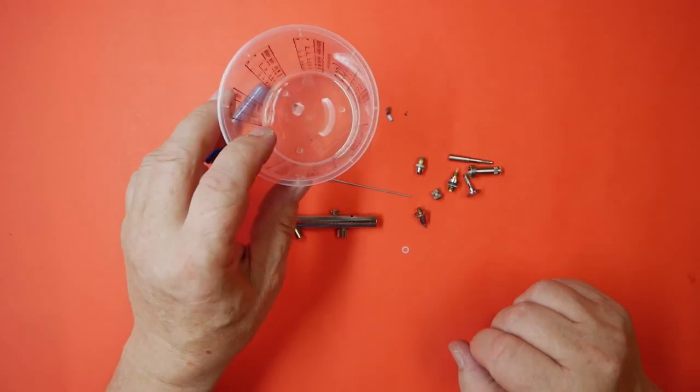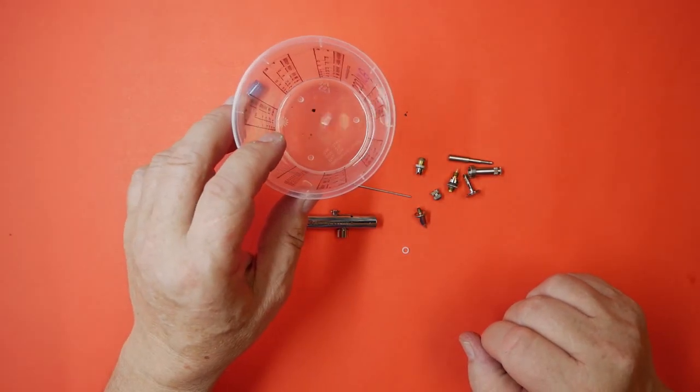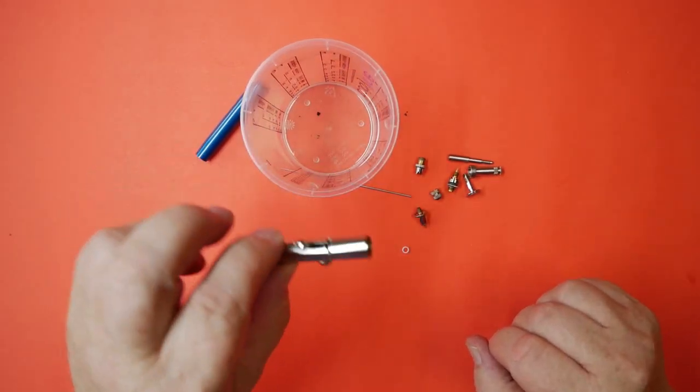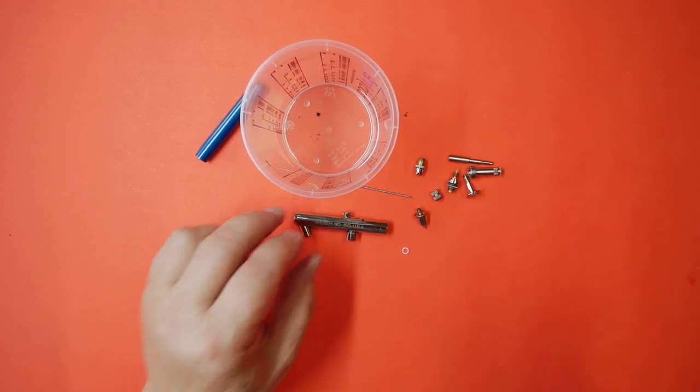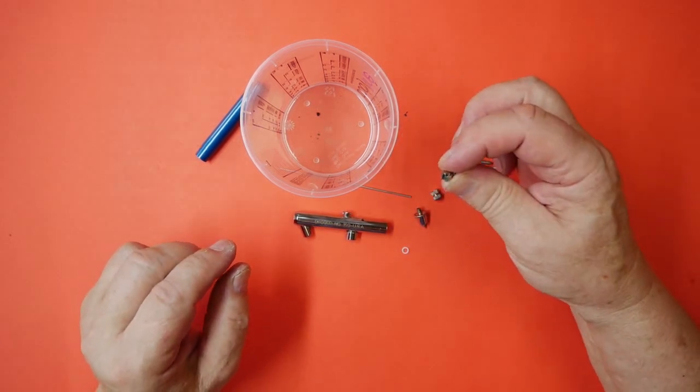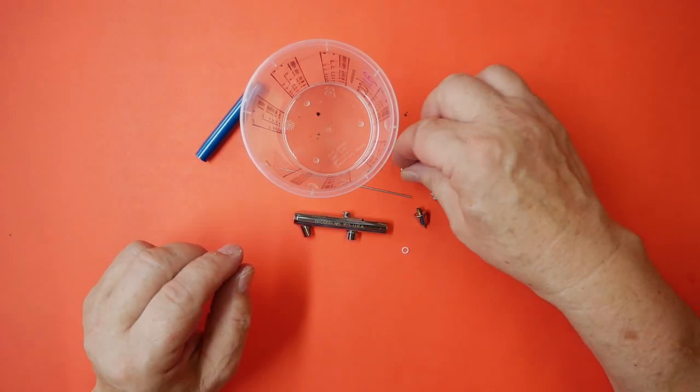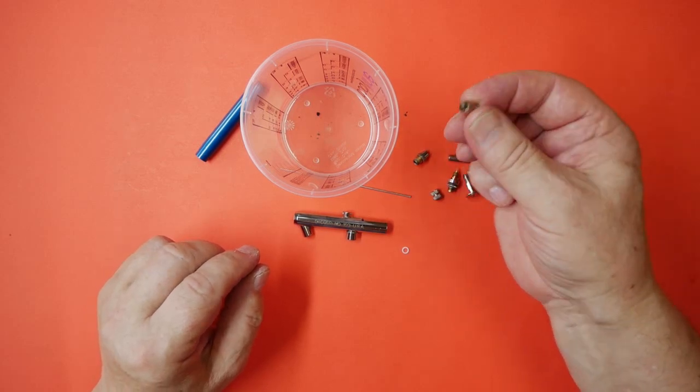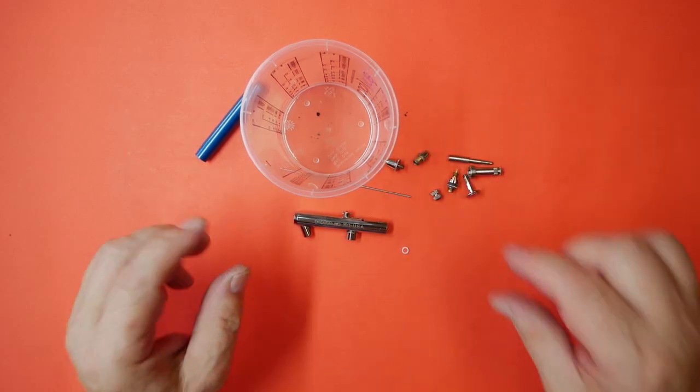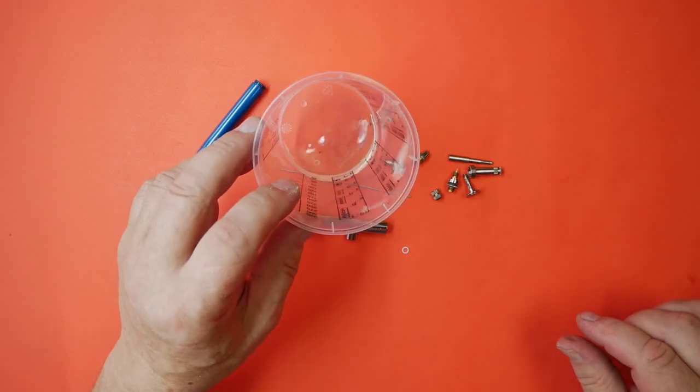As you can see in the cup that we soaked the main body part after we'd taken it all apart, and we put the spray regulator and the head with the tip attached in there, you can see there is quite a few debris in there.